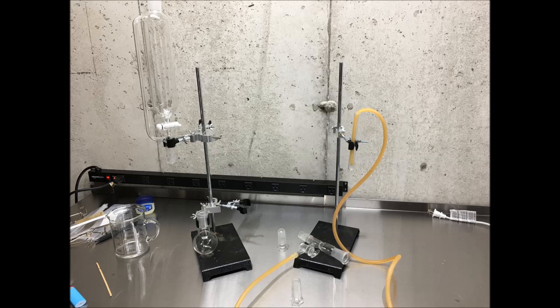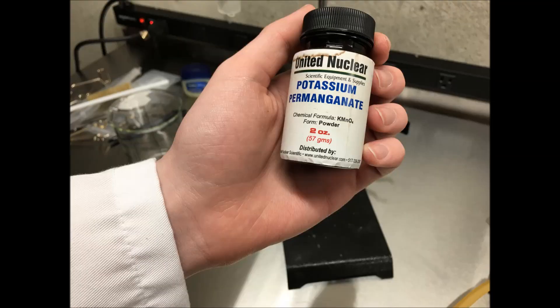Hello, and welcome to another episode of But Preston Did It. Today we will be making oxygen gas from potassium permanganate and concentrated hydrogen peroxide.